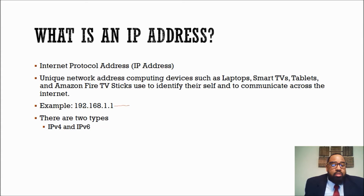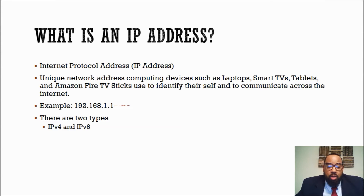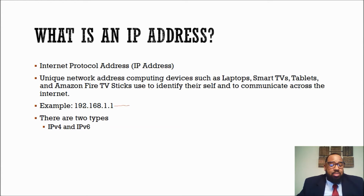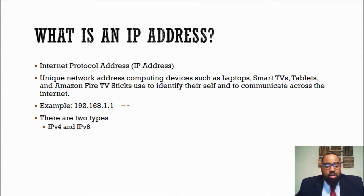Now there are two types of IP addresses: IPv4 and IPv6. IPv4 is the most common and it's actually the oldest. We're actually running out of IPv4 — if not, we're pretty much out of IPv4 addresses. IPv6 has been around for over 10 years but it's just now really catching on. It's hexadecimal IP addressing, which provides a larger range of IP addresses for devices to communicate across the internet.